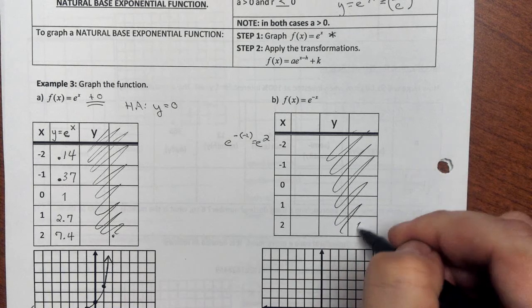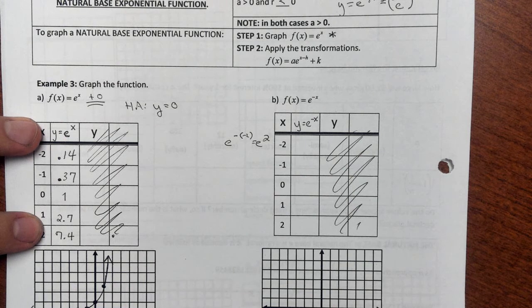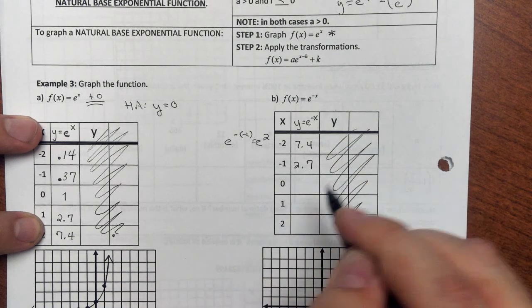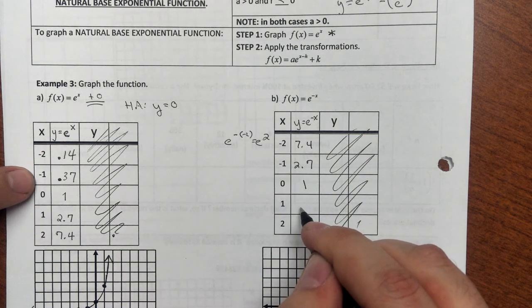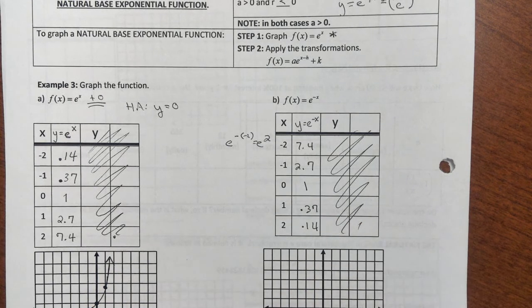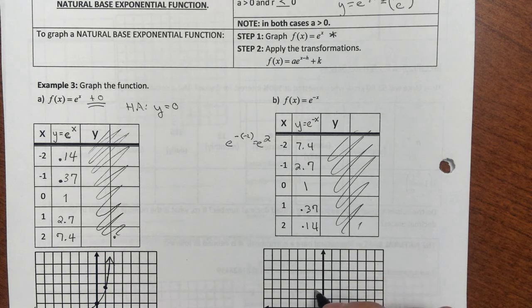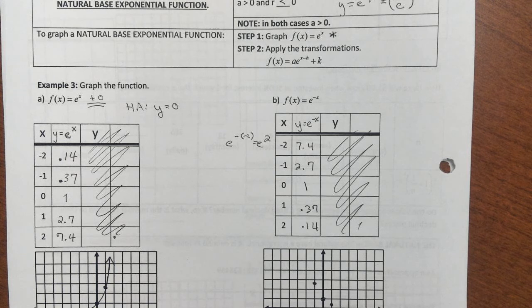And again, I don't think I really need these columns. So y is e to the negative x, and I'm just going to switch these values that are over here. So 7.4, 2.7, 1, 0.37, 0.14. So again, I'm going to plot those. 0, 1. 1, 0.37 is about here. 2, 0.14, again, can't draw that real accurately.